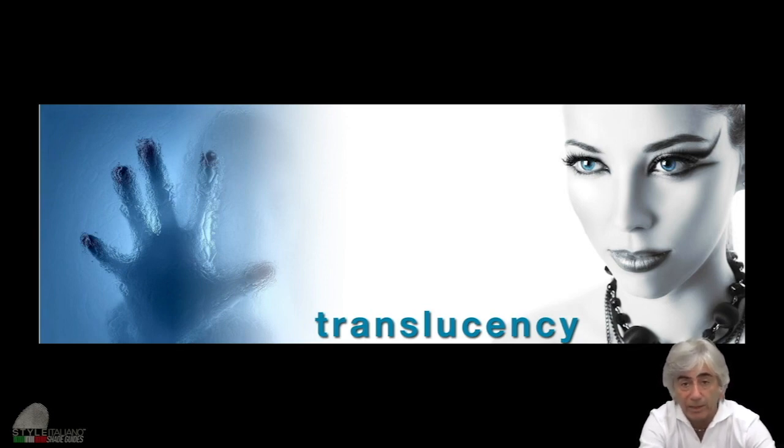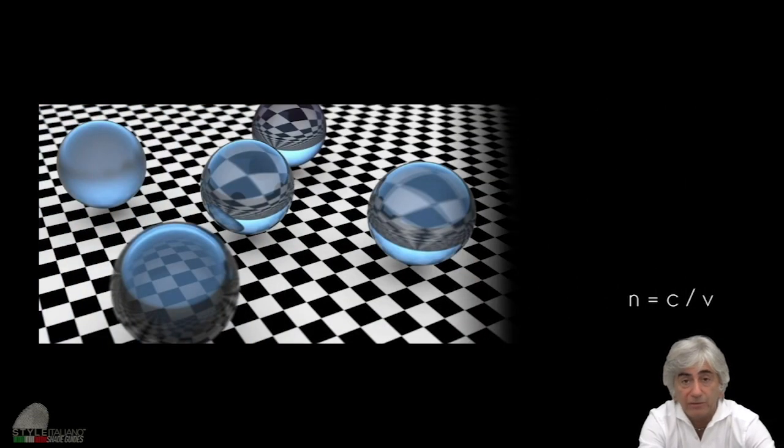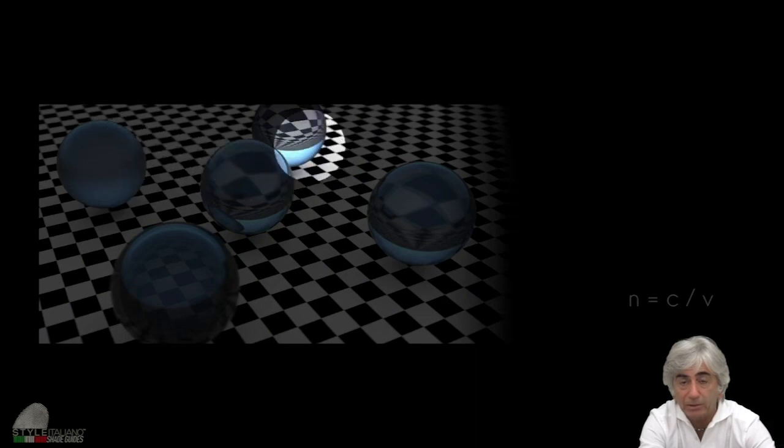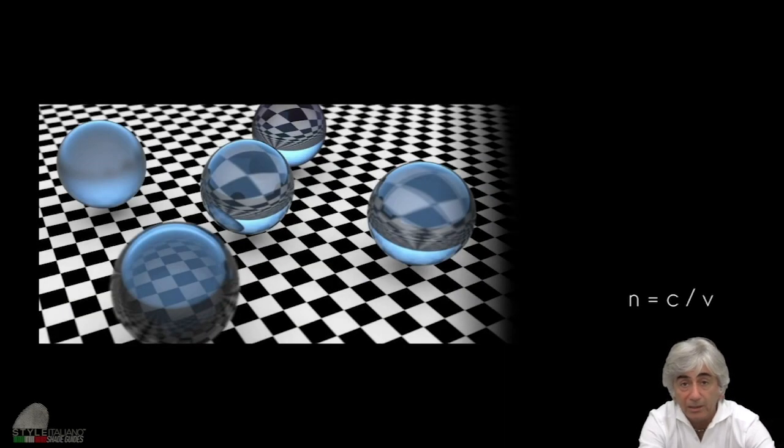You see these different balls. You have this one that is totally opaque and this one that is totally translucent. What you see is different color, different shape, because of a different background.